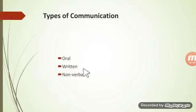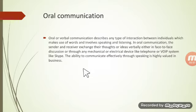The types of communication might be oral, written, or non-verbal. What is oral communication? Oral communication, also called verbal communication, describes any type of interaction between individuals which makes use of words and involves speaking and listening — in which we use words to interact with each other.